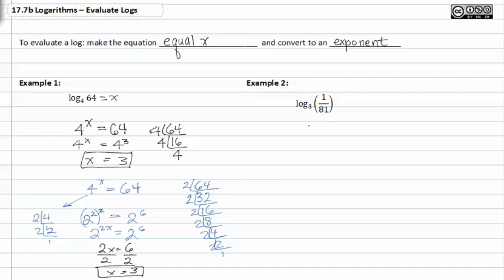In example two, again I have a base three and I have one over eighty-one. Let's set this equal to x since we don't know what it equals yet. Three to the x is equal to one over eighty-one.